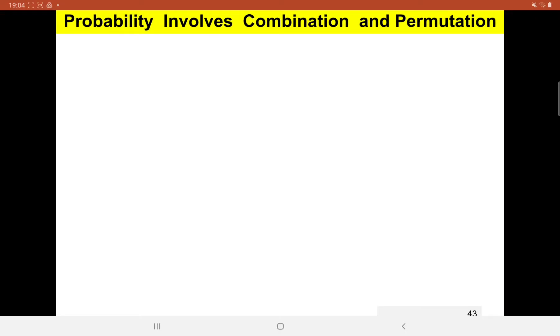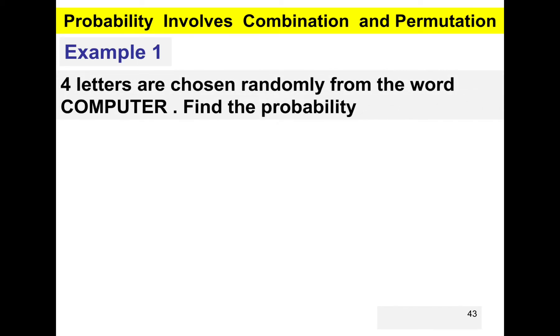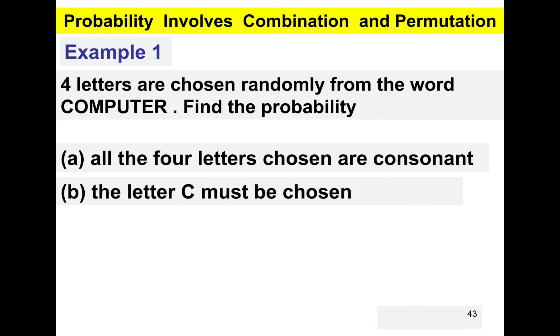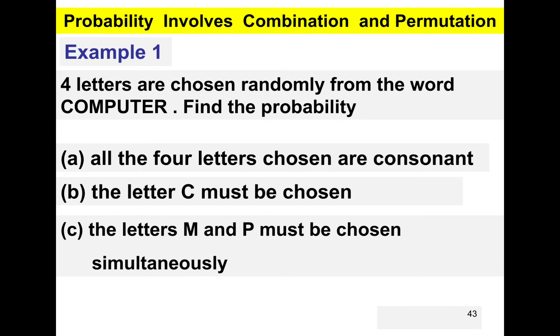Hello everyone. Now we are in the probability involving combination and permutation. For example number one, four letters are chosen randomly from the word COMPUTER. Find the probability of: (a) all four letters chosen are consonants, (b) the letter C must be chosen, and (c) the letters P and M must be chosen simultaneously.